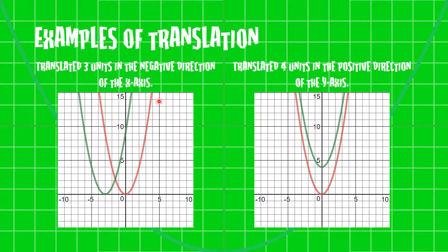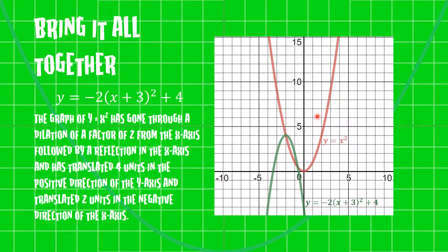So here are some examples. As you can see over here to your left, we have the graph of y = x² translated three units in the negative direction of the x-axis, so we're moving away from the first quadrant. And here we have the graph of x² translated four units in the positive direction of the y-axis, moving closer to here but moving vertically.